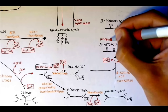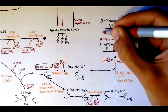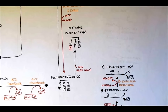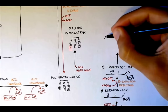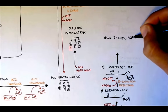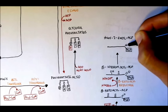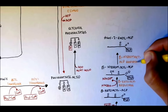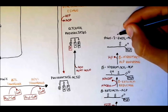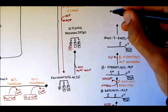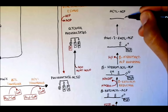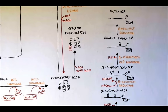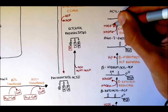Beta-ketoacyl-ACP is then reduced to form beta-hydroxyacyl-ACP by the enzyme beta-ketoacyl reductase, and NADPH is oxidized to NADP+. Beta-hydroxyacyl-ACP is then dehydrated to form trans-2-enoyl-ACP, and then reduced again by the enzyme enoyl-ACP reductase, with NADPH again oxidized to NADP+.